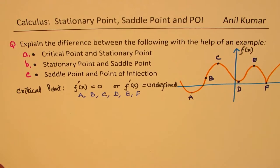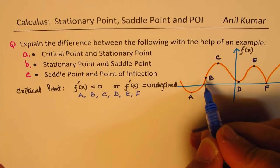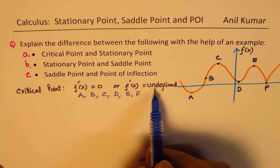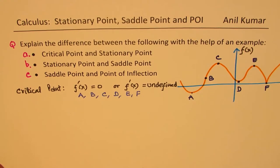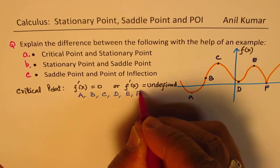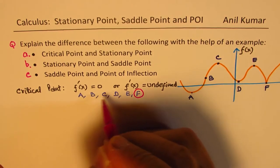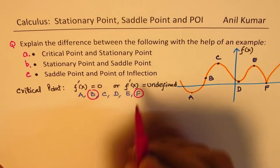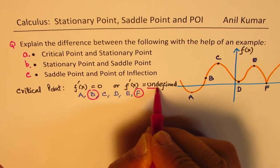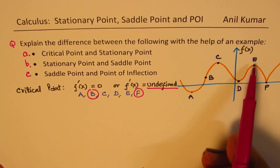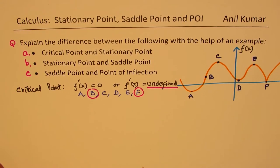At B it looks like a vertical tangent, so it is also undefined. At any cusp or corner, the derivative is undefined, and a vertical tangent is also undefined. So the ones at F and B are undefined, while the other ones are the turning points.